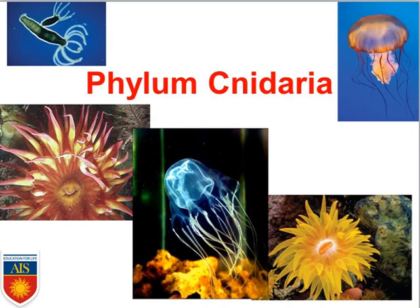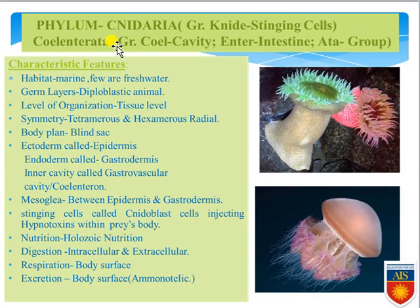Phylum Cnidaria: the word comes from 'knide' meaning stinging — organisms containing stinging cells are Cnidarian organisms. These organisms can also be called Coelenterata because their body contains a coelenteron or cavity — 'sil' means cavity and 'enteron' means intestine — meaning intestine within a cavity.